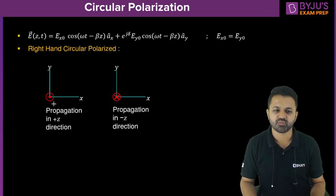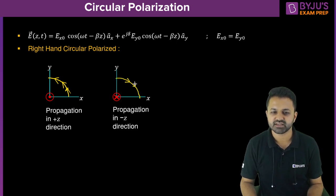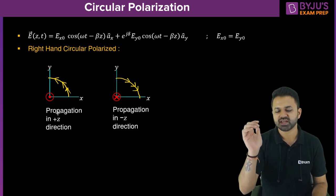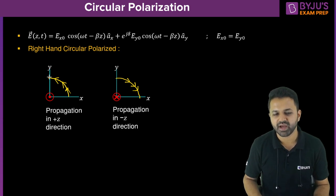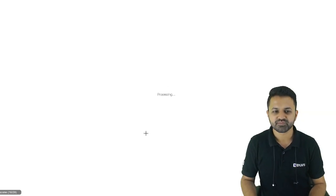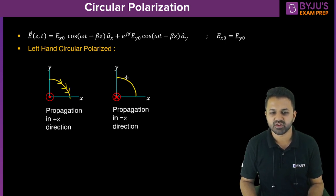For a wave propagating in the positive z direction, right hand circular polarization requires rotation from x to y. If propagating in the negative z direction, RHCP requires rotation from y to x. For left hand circular polarization: if propagating in the positive z direction, the rotation should be from y to x; if in the negative z direction, it should be from x to y.